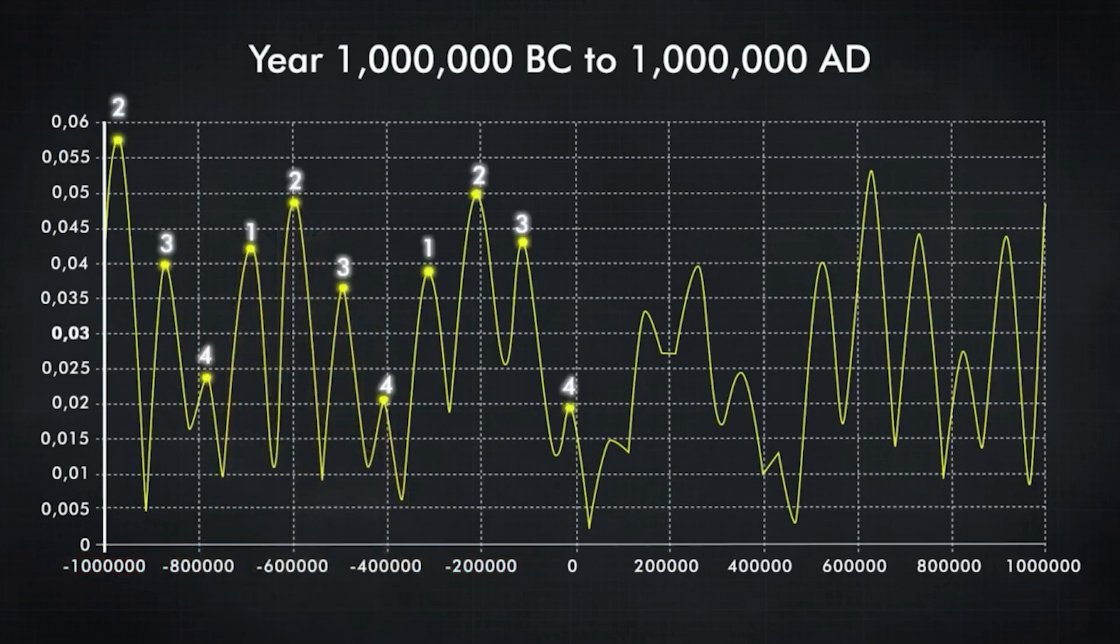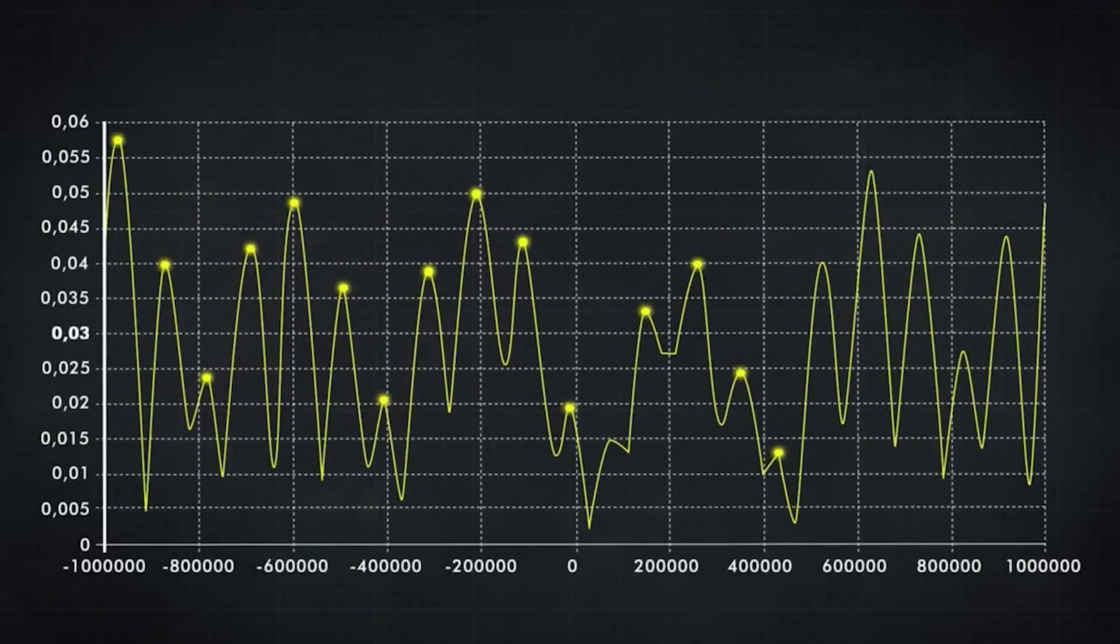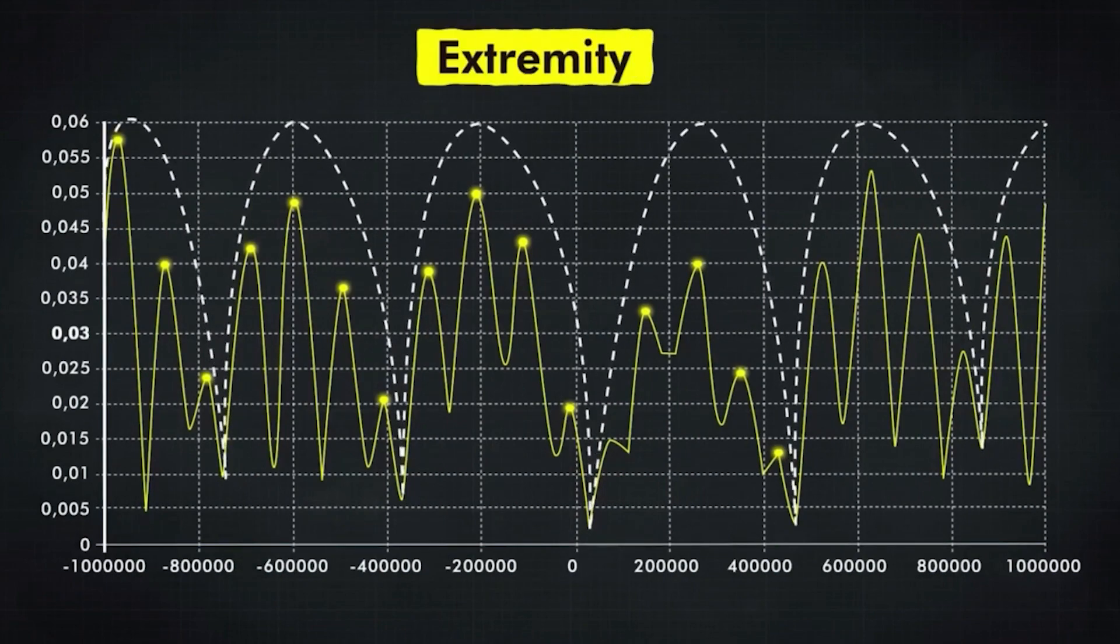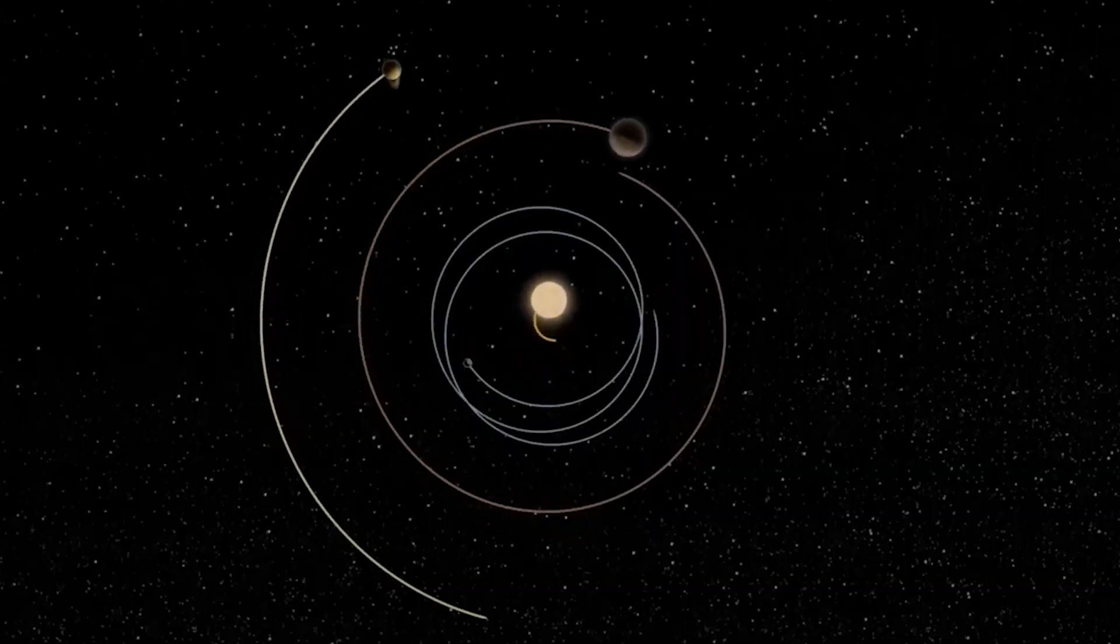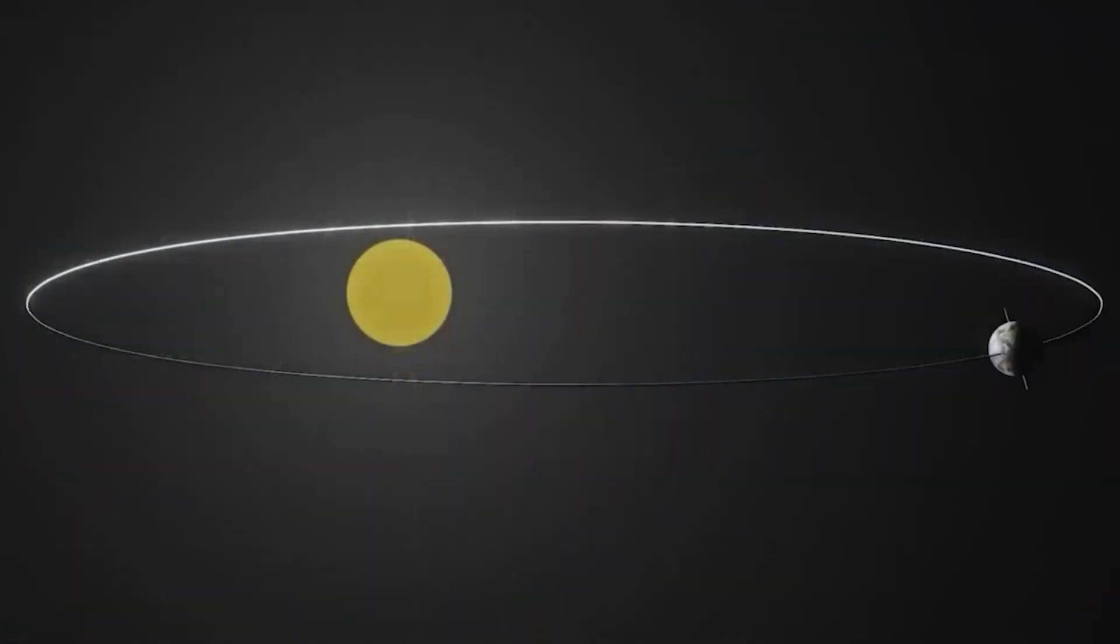As Earth spins, its axis wobbles in a circle. This effect is called axial precession. As a result, in our era the axis points in the north toward the star Polaris, known as the North Star, but in a few thousand years it will point to the star Kochab in the constellation Little Dipper.